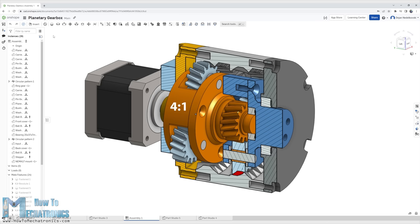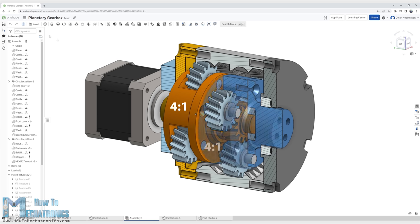The planet carrier of the first stage is now the input or the sun gear of the second stage, where another 4 times speed reduction occurs. The planet carrier of the second stage is the final output shaft of the gearbox. The output speed of the gearbox is a product of the 2 stages reduction, or 4 times 4 equals 16 times slower output speed than the input of the motor.